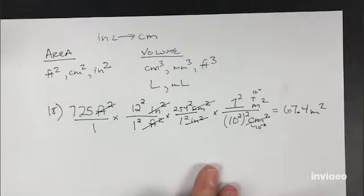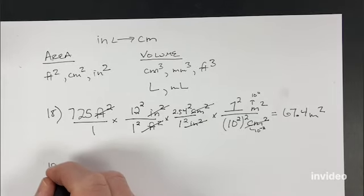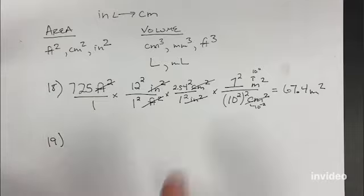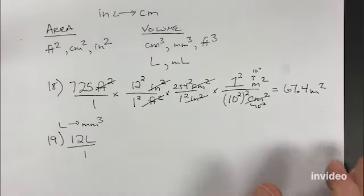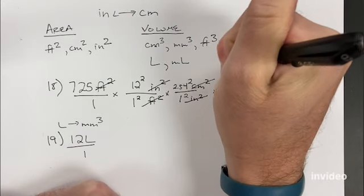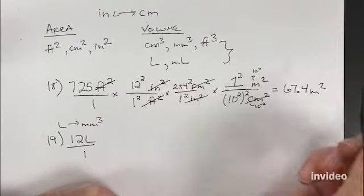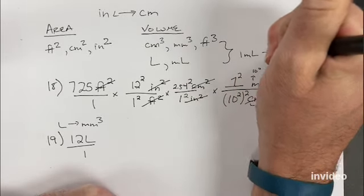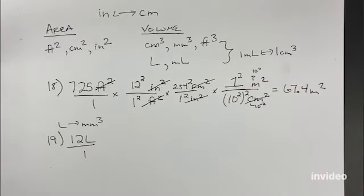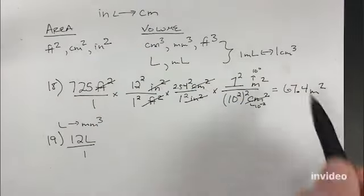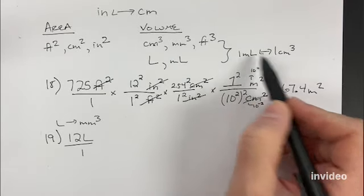It's similar for volume. If we have units that are both cubed, we have to cube our numbers. For volume conversions, if we want to convert from liters to a cubic unit, we need to know that one milliliter and one cubic centimeter are the same. So like inches to centimeters for English to metric, if we want to go from metric to cubed units, we always have to use milliliters or cubic centimeters as our bridge conversion.